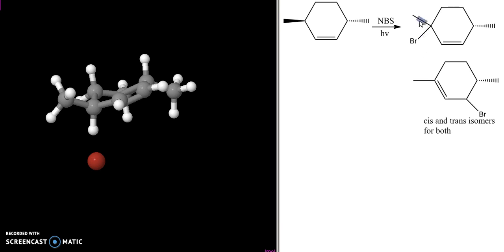So in this case, I'm talking about the cis and trans relative position of these two methyl groups. Here, I'm talking about the cis and trans relative position of the bromine and the methyl group.